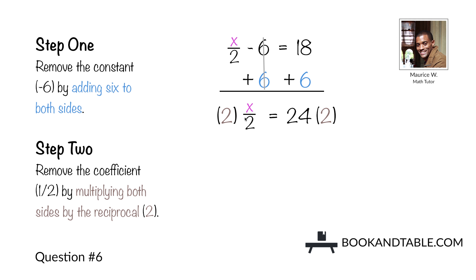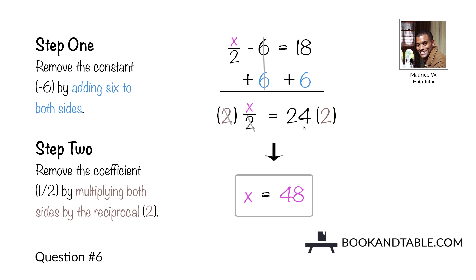Step two: multiply both sides by the reciprocal of 1/2, which is 2 over 1. When you do that, the 2s cancel out, leaving you with x on the left side. 24 times 2 gives us 48. So the answer to question number six is x is equal to 48.